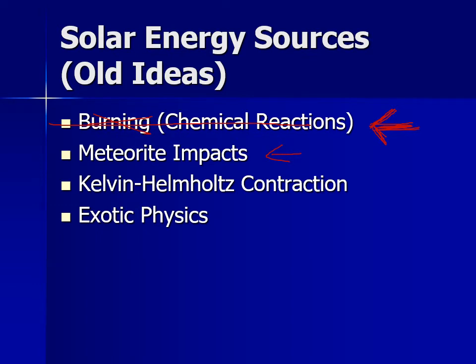The next idea came from William Herschel: meteorite impacts. Around the time people were realizing meteorites could hit the Earth, Herschel noted that the sun is the biggest thing in the solar system, so maybe its gravity pulls in enormous numbers of meteorites. He and others did mathematical analysis and suggested that the gravitational energy released by all those impacts could keep the sun hot for about 10,000 years, which predated historical records. But that still didn't seem to work well enough.